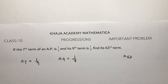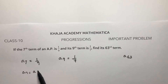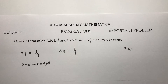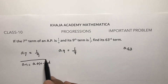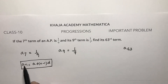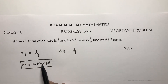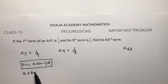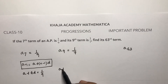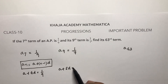We will apply the formula: aₙ = a + (n-1)d. So a7 will be a + (7-1)d, that is a + 6d, which equals 1/9. And a9 will be a + 8d, because 9 minus 1 is 8, which equals 1/7.